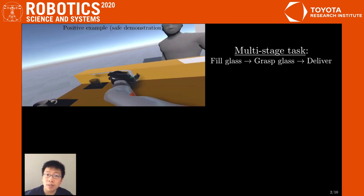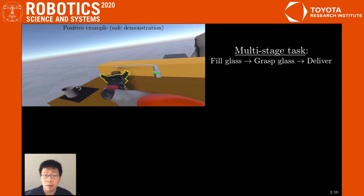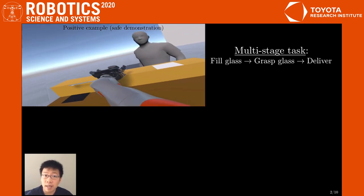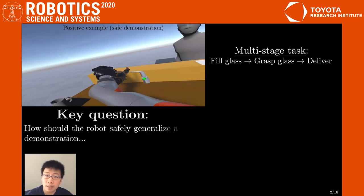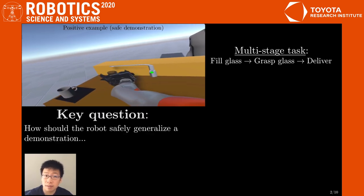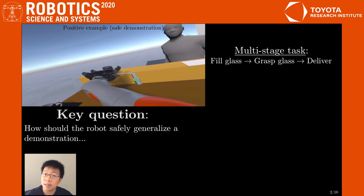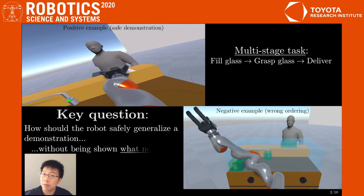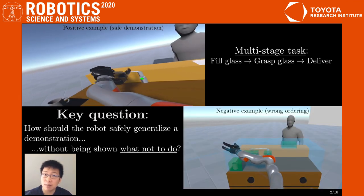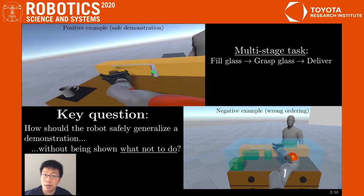Imagine demonstrating a multi-stage task to a robot bartender. First fill the glass, then grasp it, and then deliver it, and do so efficiently. How should a robot take only successful demonstrations of this task and infer what must be done to complete the task, and also what must be avoided, like completing task components in the wrong order or colliding with the human?